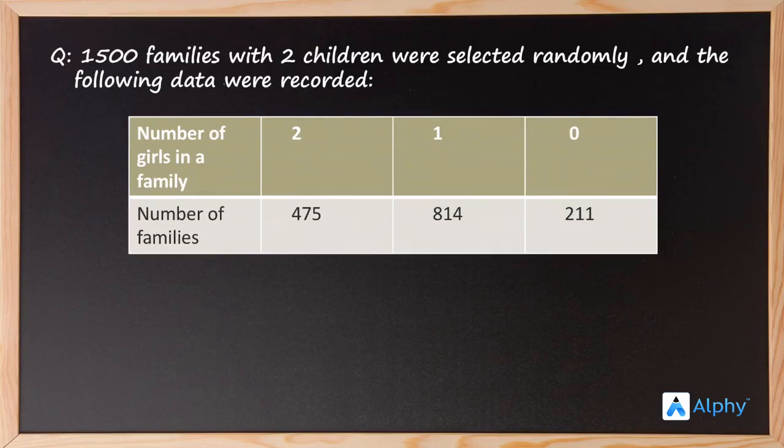The table gives the number of families and the number of girls in each family. There are 475 families with two girls, 814 families with a single girl, and 211 families with no girls at all.